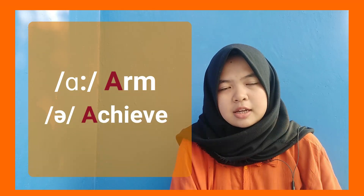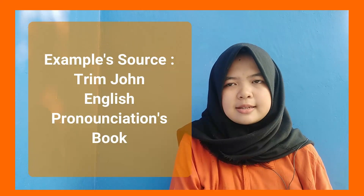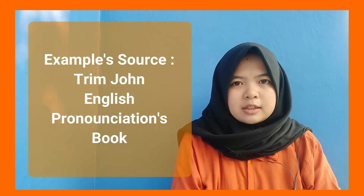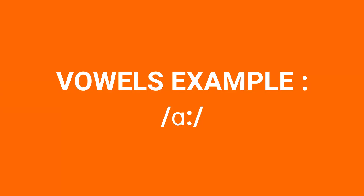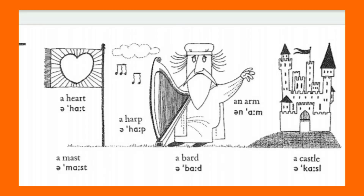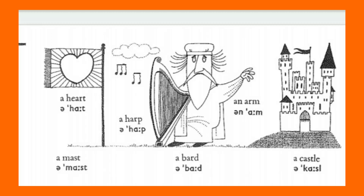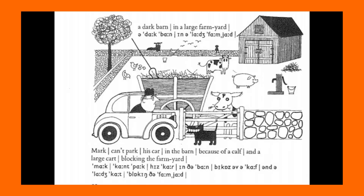For this part, I will show you how to pronounce /ɑː/ as in the word 'arm'. Let's take a look at these examples from Rincon's English Pronouncing Dictionary: a heart, a bird, an arm, a castle, a palm, a carpet, a fast car, a farm cart, a dark barn, and a large farmyard. Mark can park his car in the barn because of a calf and a large cart blocking the farmyard.